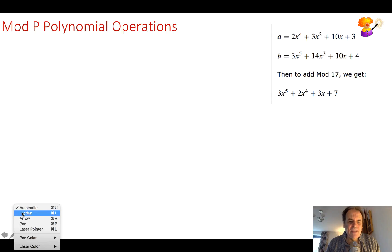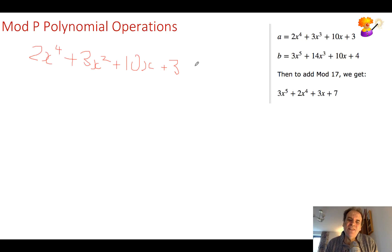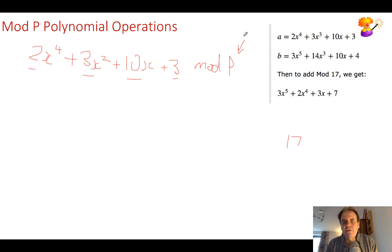Let's look at some basic principles. So if we have a polynomial such as this one — 3x squared plus 10x plus 3 — we operate on these in roughly the same way but we bring in a mod p. These are the coefficients of our values. If we take an example of 17 for our value of p, if we get a value of 17 or any of its multiples such as 34, then this becomes 0.